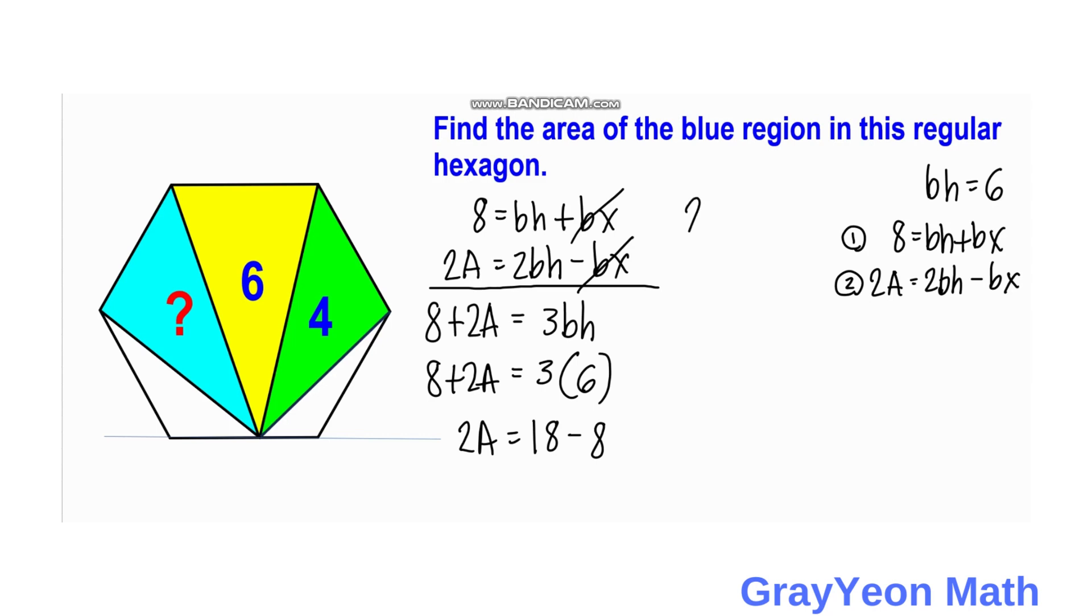We have 2A is equal to 10. And A is equal to 5 if we divide or multiply this by 1 half both sides. We have A is equal to 5. And A is actually the unknown region. So, our answer is A is equal to 5 square units. And that is our answer.